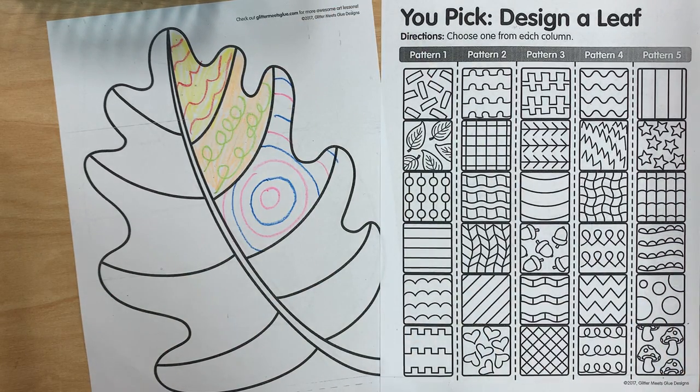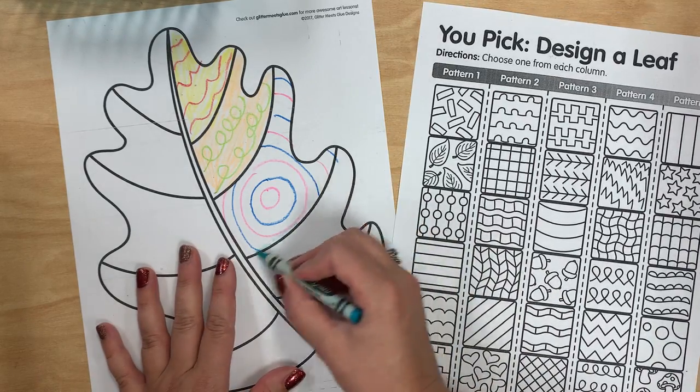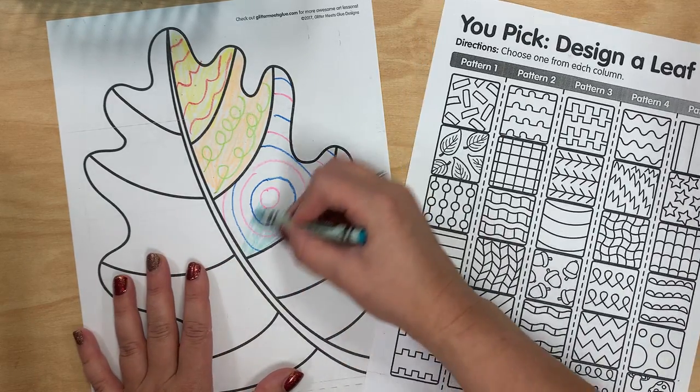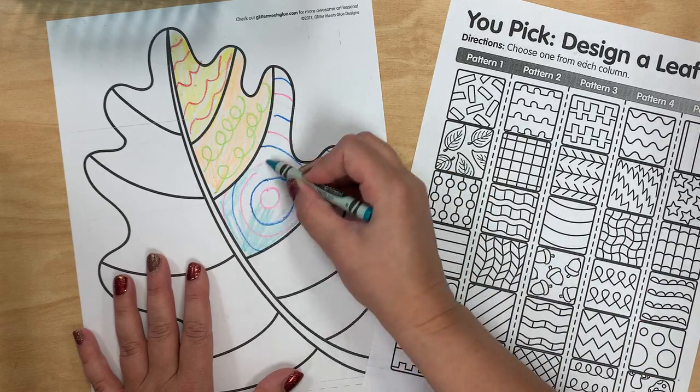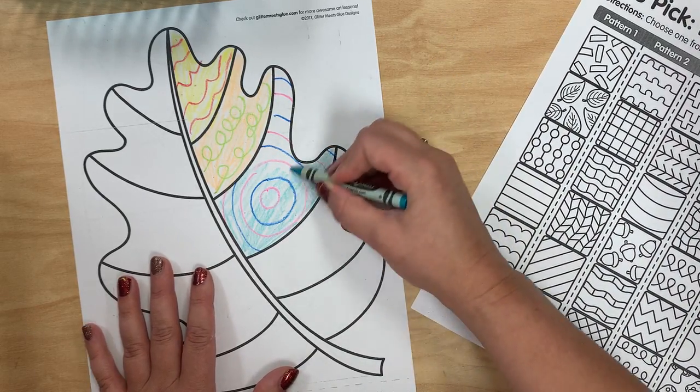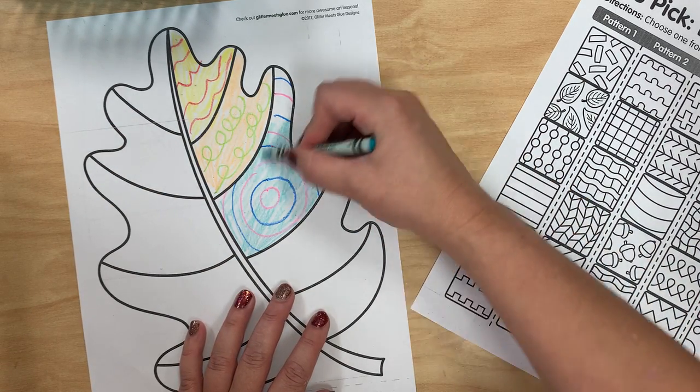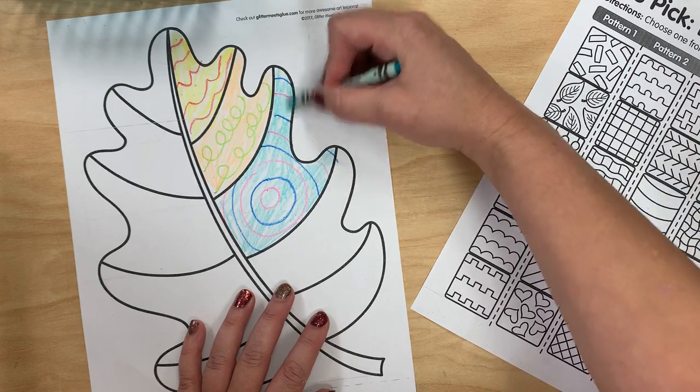And then once again I will choose a color to go between my pattern lines. Look at all the different colors I'm using. So far I've used one two three four five six seven eight colors and I've only been in three of the sections.